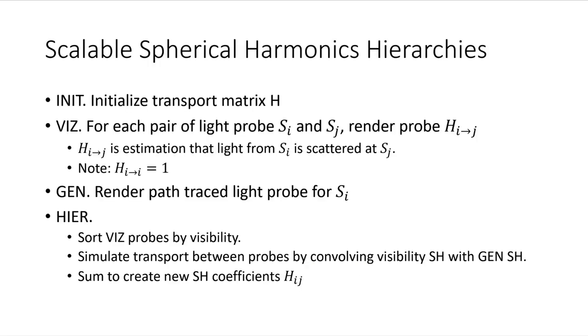So now we come to our method, Scalable Spherical Harmonics Hierarchies. It requires a four-step process: init, vis, gen, and hier. This stands for initialization, visibility, generation, and hierarchies. The key to understanding our method is that we need to calculate the visibility between SPHLs. So we use a matrix H which stores the visibility between SPHLs as spherical harmonics. We will call this relationship between SPHLs H as I goes to J. So this is what the vis step is all about.